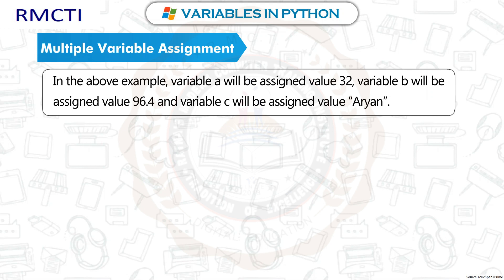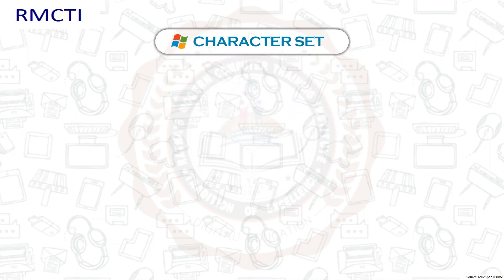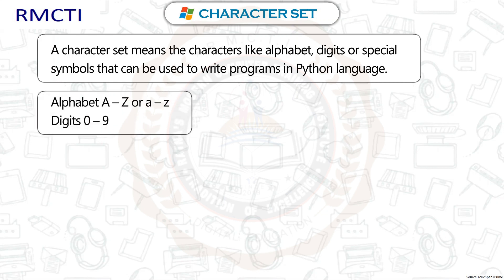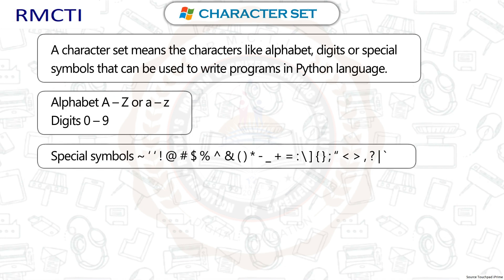Character set: A character set means the characters — like alphabet, digits, or special symbols — that can be used to write programs in Python. Alphabet: A to Z (uppercase) or a to z (lowercase). Digits: 0 to 9. Special symbols include inverted commas, !, @, #, $, %, ^, and brackets.